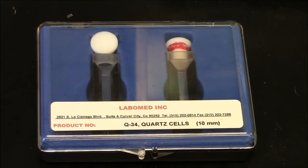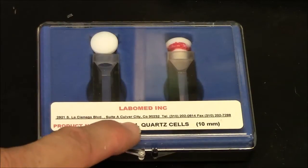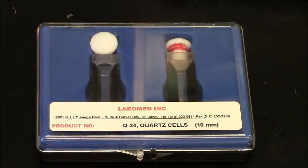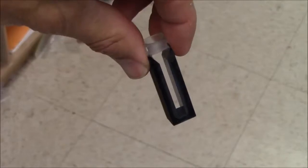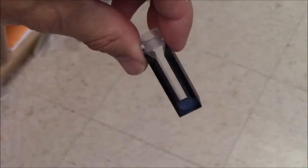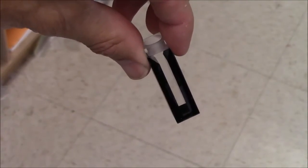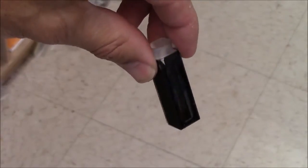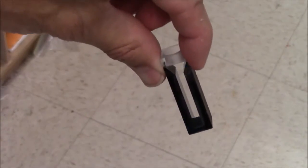The best cuvettes are quartz, and these are transparent into the UV down to about 190 or 200 nanometers. The most common cuvette you'll use in ACR is this size. It is called a semi-micro cuvette. It has a volume inside of about a milliliter.